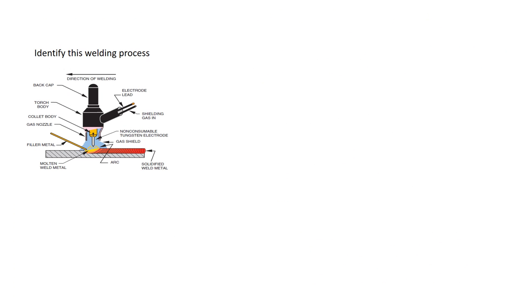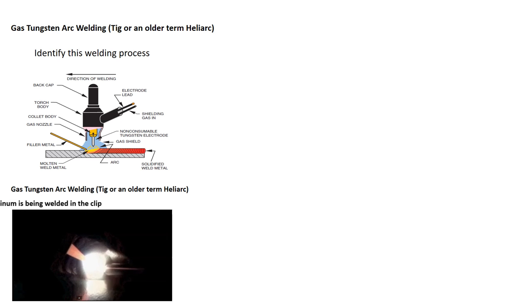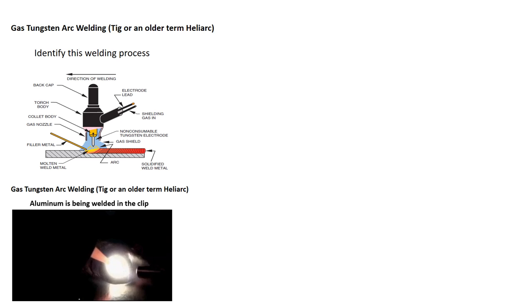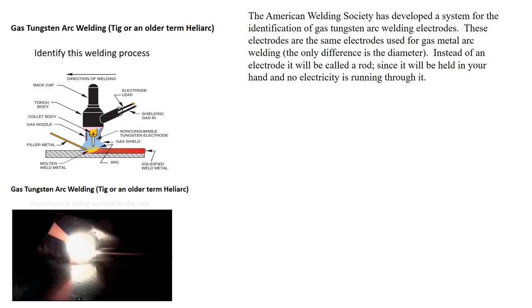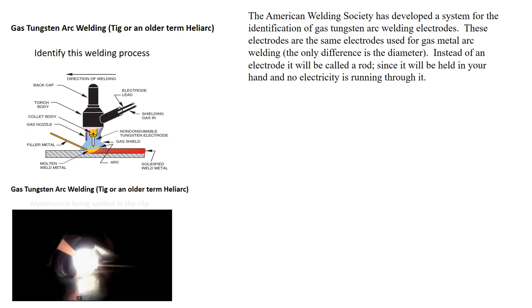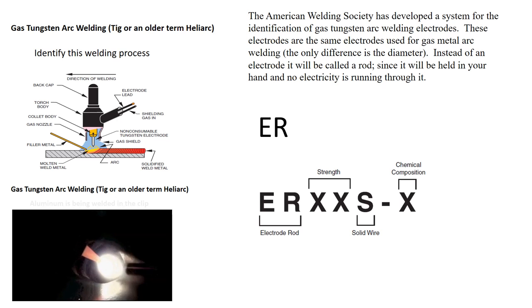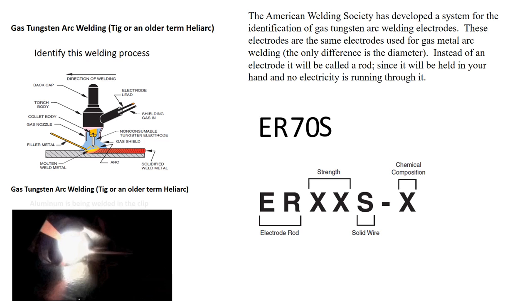Take a few minutes and identify this welding process. This welding process is referred to as gas tungsten arc welding, also known as TIG or Heliarc. The American Welding Society has developed a system for identifying the gas tungsten arc welding electrode. The ER stands for electrode rod; the 70 stands for tensile strength, which is the minimum tensile strength — 70,000 pounds per square inch; the S lets you know that it's a solid wire; and the 6 is the chemical composition.